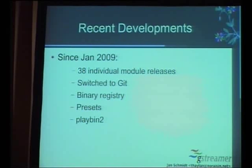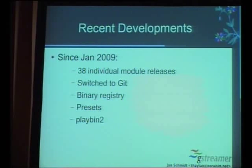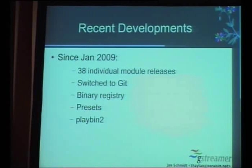They switched the registry format from XML to a custom binary format, making the registry smaller and faster to load, and removing the libxml2 dependency—except for one feature no one uses: the ability to serialize a graph description to XML. You can now build without libxml2, which is something people using GStreamer in embedded systems care about for subsetting.